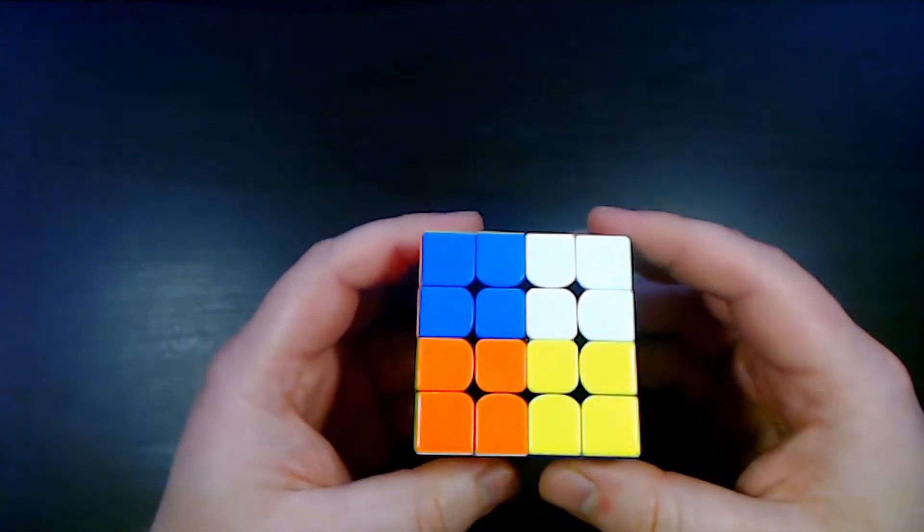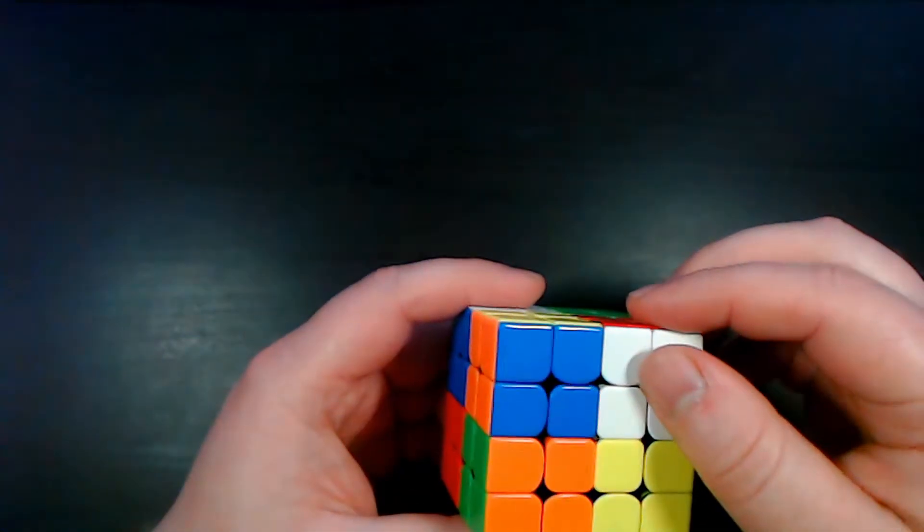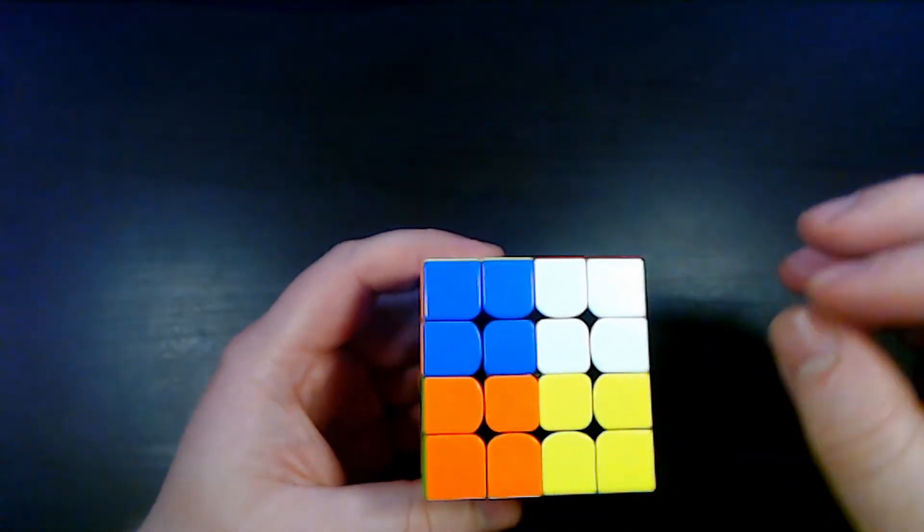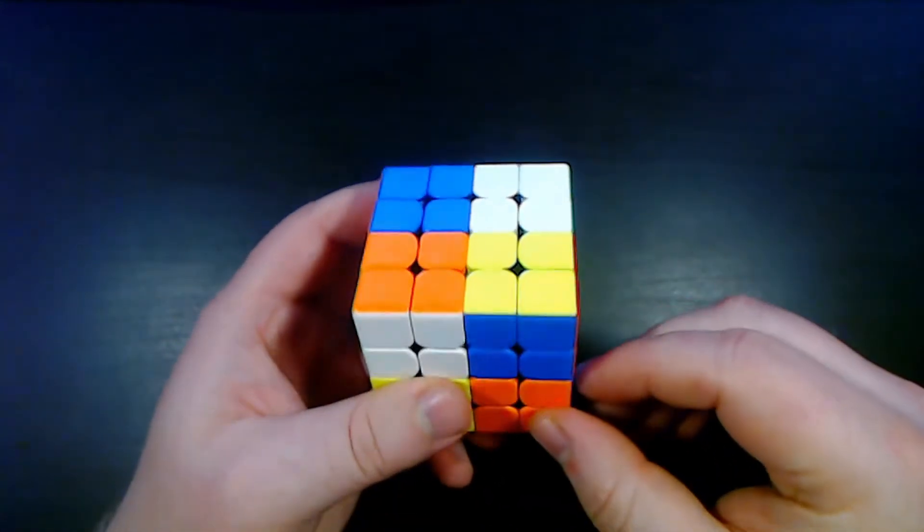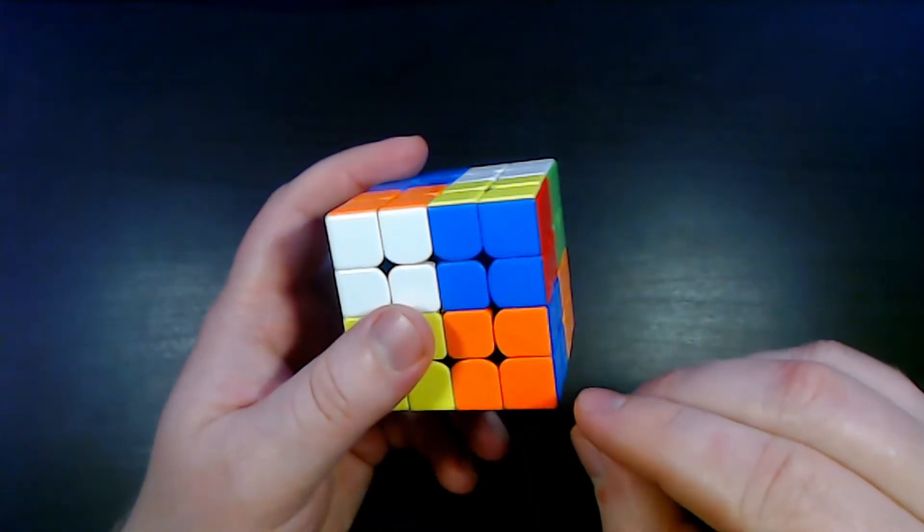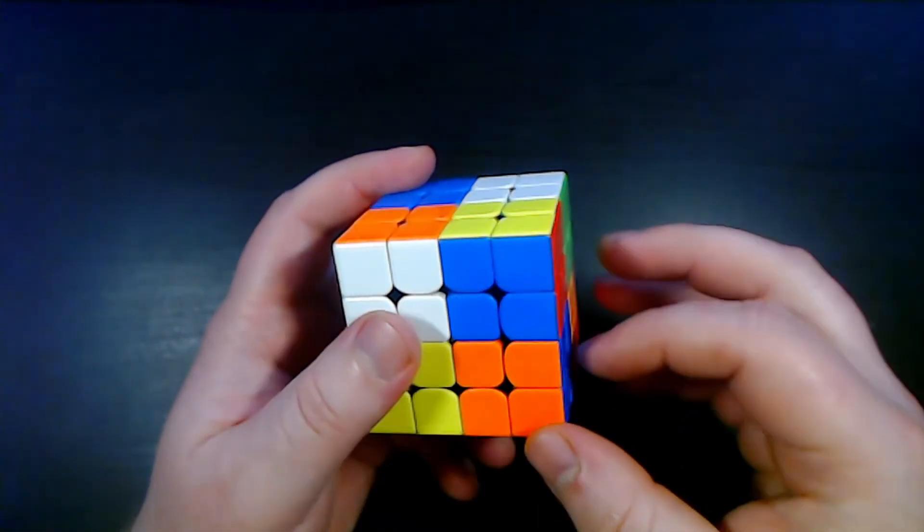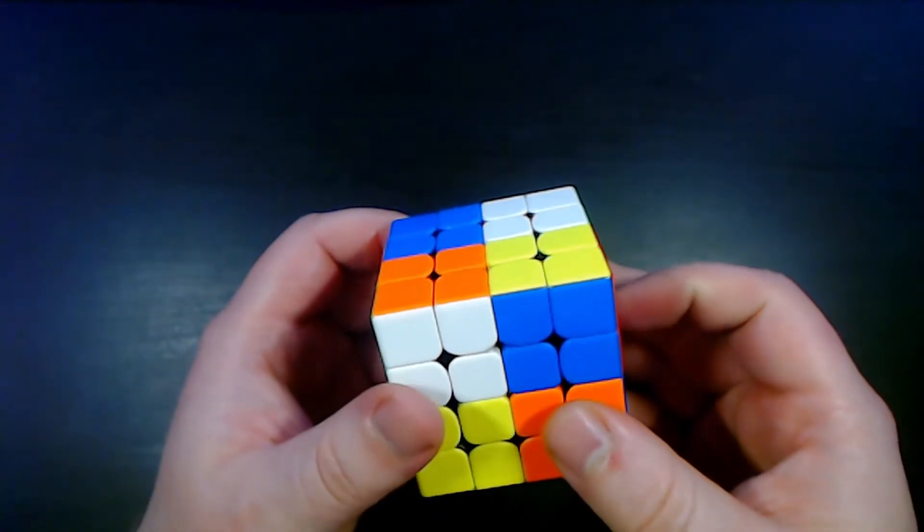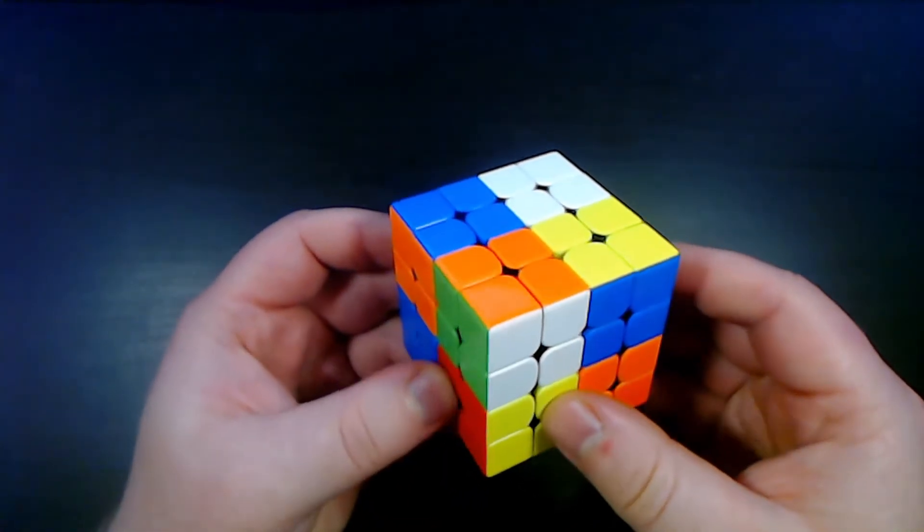ECEE algs are designed to solve two edges with their specific corner and preserve most of the rest of the relationship of the edge pieces with their corners. So some of the algs seem like they are longer than they need to be but they are that way for a reason.